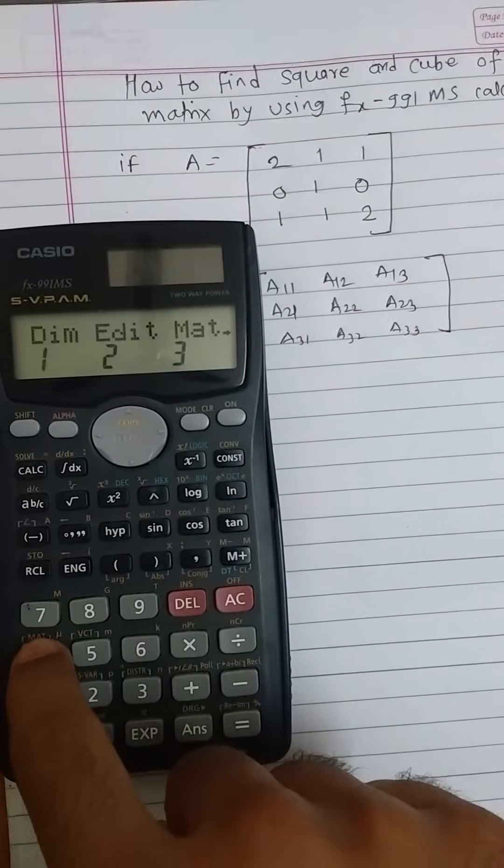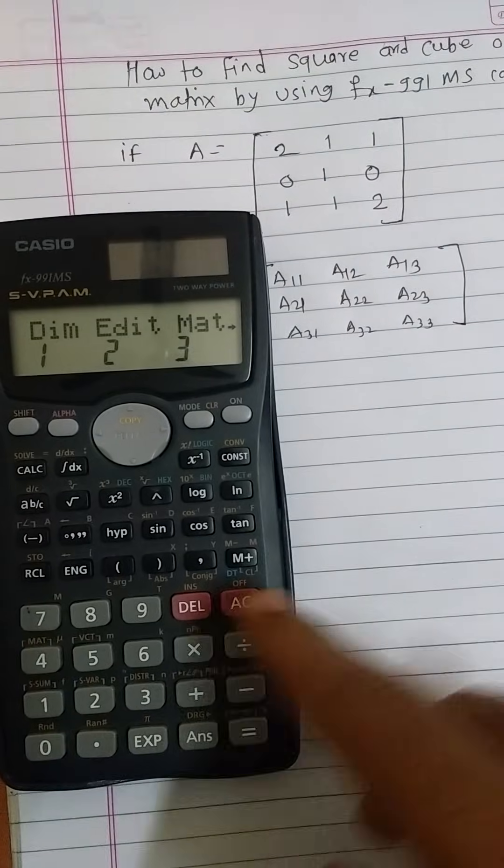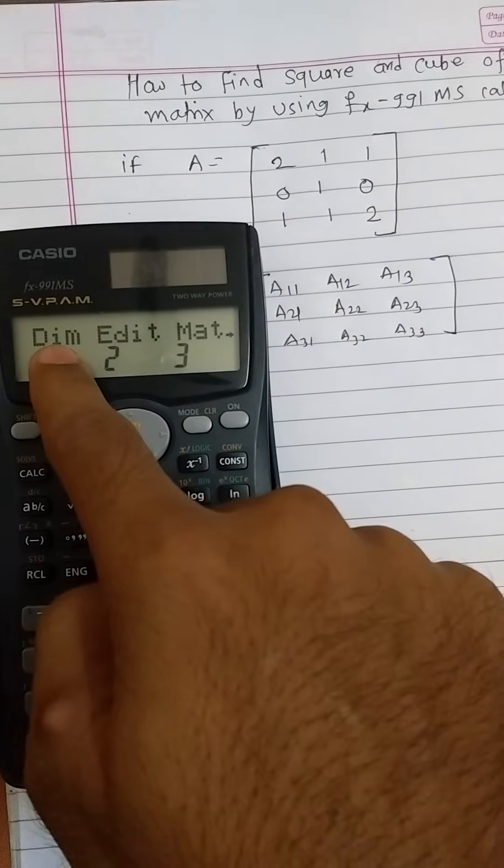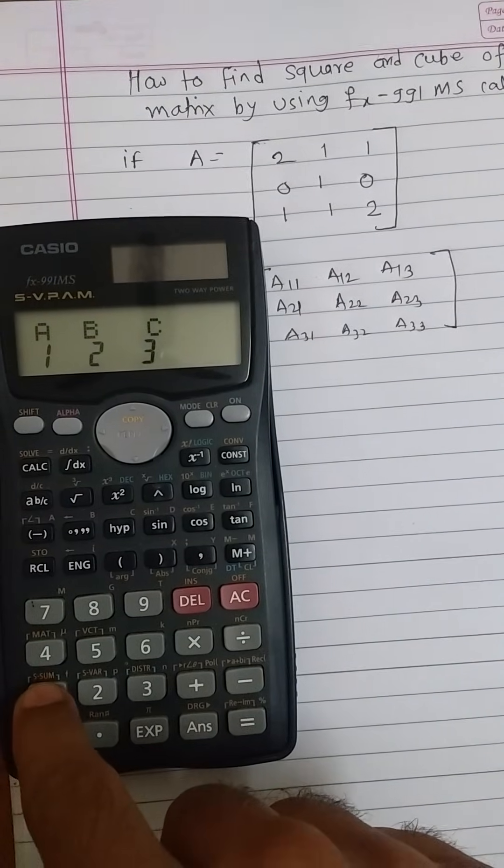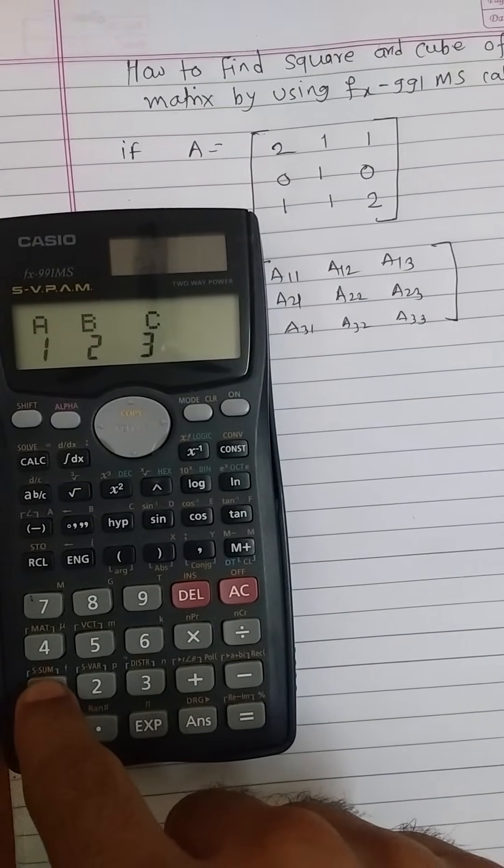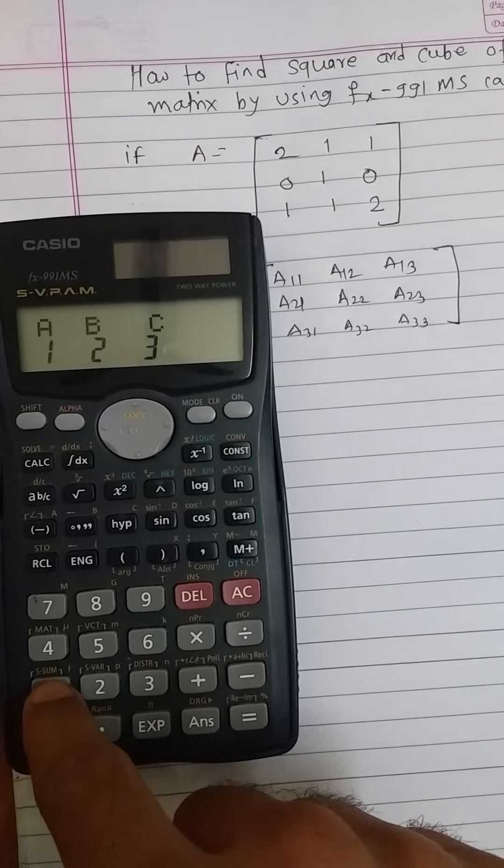To decide the dimension of matrix, press button one, that is dimension. Then choose any one of the matrix A, B, or C by pressing one, two, or three respectively. Press one for matrix A.